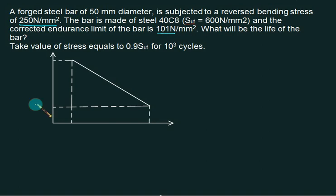You know the value of Se is 101. What will be the life of the bar for 250 MPa stress? This value will come somewhere here, and this is a standard number: 10³ cycles here and 10⁶ cycles here. Take the value of stress equal to 0.9 of Sut for 10³ cycles. So 0.9 times 600 gives this value as 540 N/mm².